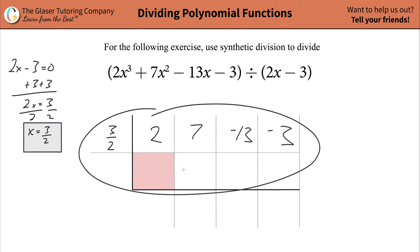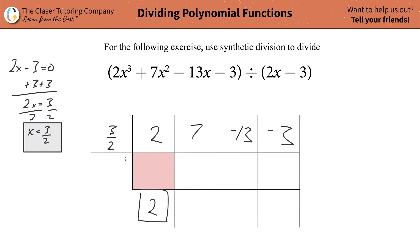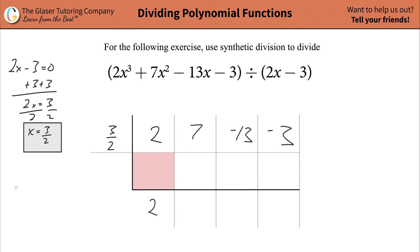Now that you have your synthetic division table created, let's talk about the process. First, just drop down whatever the first coefficient is — rewrite it at the bottom. Then take that bottom number and multiply it by the value to the left of the synthetic division symbol. So you've got 3 halves times 2, which is 6 over 2, and that reduces down to 3.